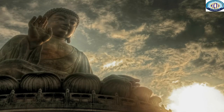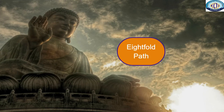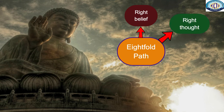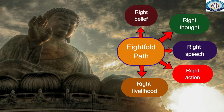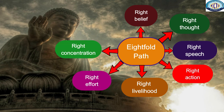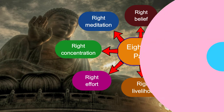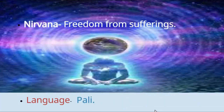Let's see what the Eightfold Path is. The Eightfold Path consists of: Right Belief, Right Thought, Right Speech, Right Action, Right Livelihood, Right Effort, Right Concentration, and Right Meditation. According to Buddha, we can attain Nirvana by observing these eightfold paths.